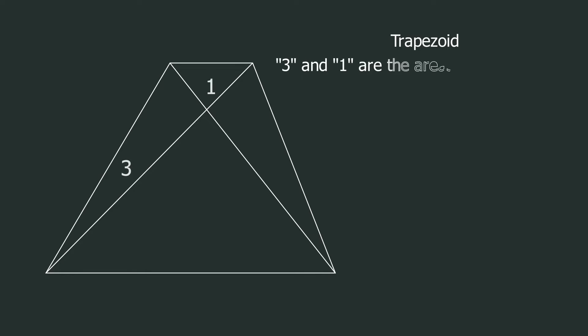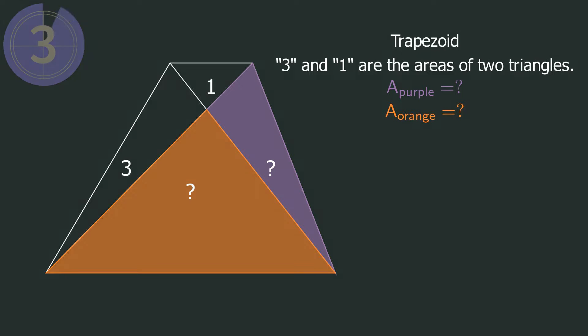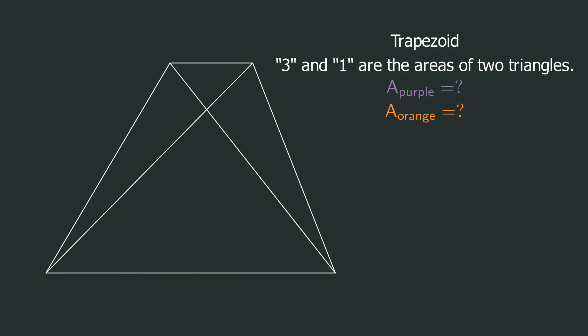Trapezoid: 3 and 1 are the areas of two triangles respectively. Find the area of the purple and orange triangles. If you learn the method, you can directly find the answer when you encounter such a problem. Let's start.